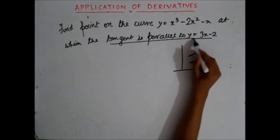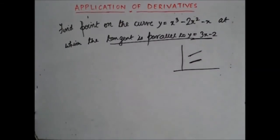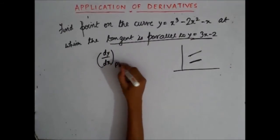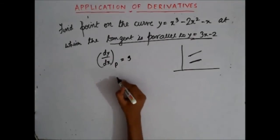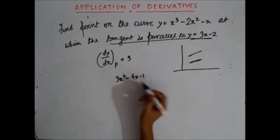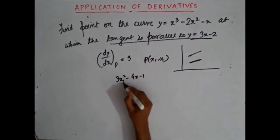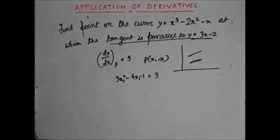The straight line y = 3x - 2 has a slope of 3, which means the tangent also has a slope of 3. So the slope of the tangent, dy/dx, at point P on the curve is 3. Let's find dy/dx: it is given by 3x² - 4x - 1. Let the point P be (x1, y1).